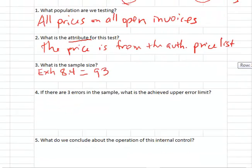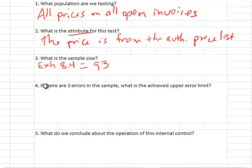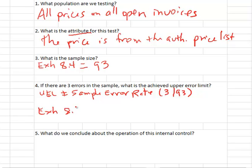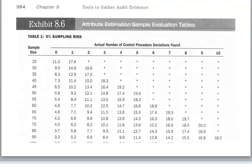So then we conduct our test. If there are three errors in the sample, what's the achieved upper error limit? Well, the auditing standards say that you're not supposed to use the sample error rate here. So the upper error limit is not the same thing as the sample error rate. The sample error rate would be three problems in 93 items tested, but that's not what we'll use. We'll use the statistical sampling table 8.6 in your book to find out how we did on our sample test.